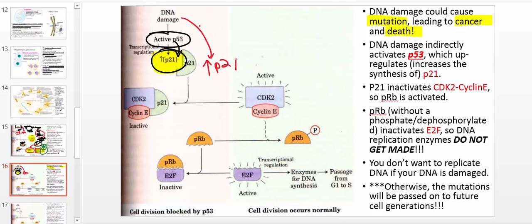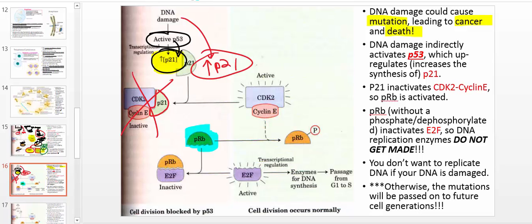Here's the mechanism by which DNA damage causes a stalling of the cell cycle. DNA damage leads to an increase in P21. P21 binds to CDK2 — along with cyclin E — and inactivates it. So CDK2 can no longer phosphorylate retinoblastic protein. Retinoblastic protein therefore remains active and can inhibit E2F. When E2F is inhibited, you don't get the enzymes needed for DNA synthesis, and you don't get passage to the S phase.